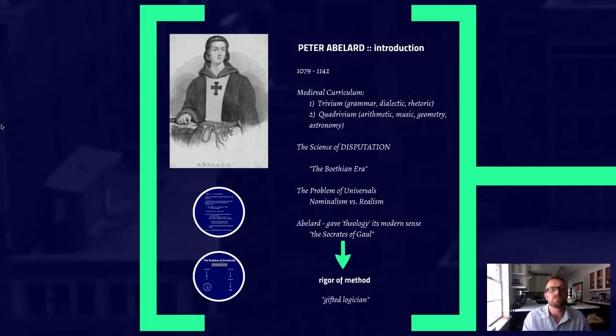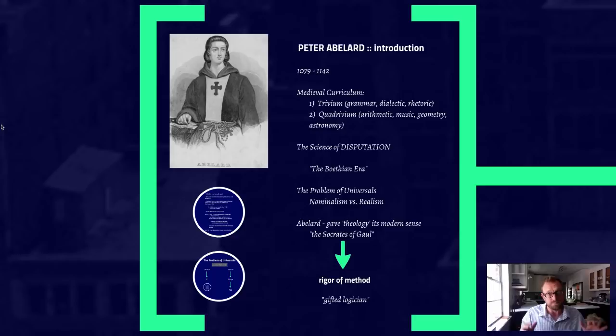Within the Middle Ages, there are two types of curriculum that students would review. The first is the trivium, which covers grammar, dialectic, and rhetoric. Then there's the quadrivium, which is arithmetic, music, geometry, and astronomy. You essentially have the language arts and the sciences — that's the way the medieval curriculum was articulated.